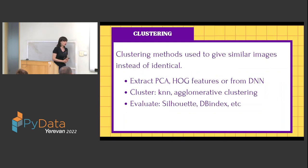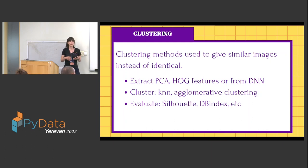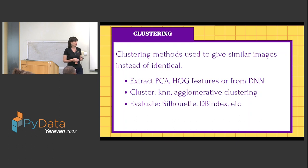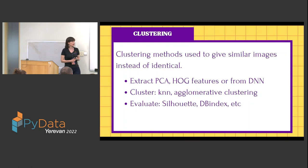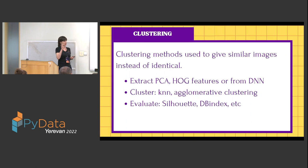We can also remove similar images. While hash functions remove identical images, clustering can remove similar ones. We can use PCA, HOG features, t-SNE, or extract features from deep neural networks, then run clustering, evaluate the clustering method, and finally remove similar images found within those clusters.